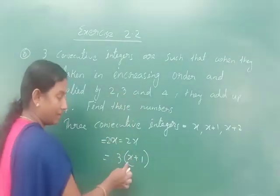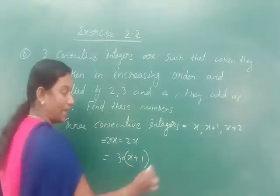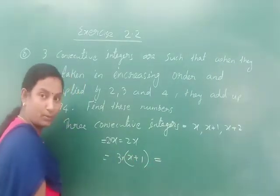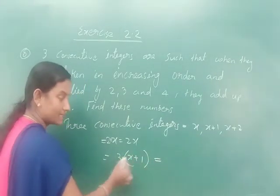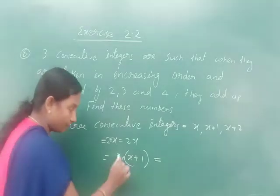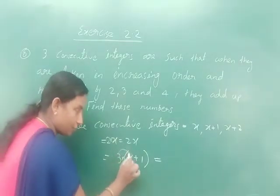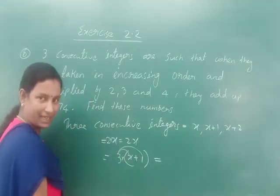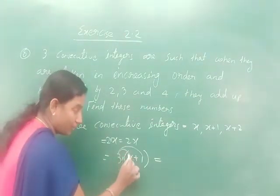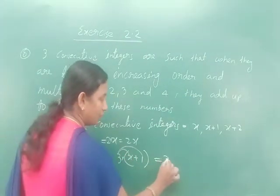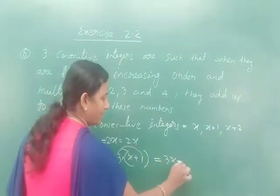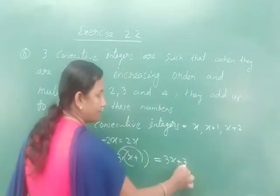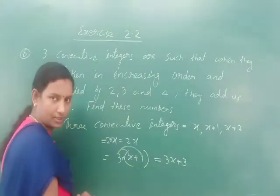How do we multiply 3 into (x+1)? We apply the distributive property: A into (B+C) equals A·B + A·C. So 3 into x is 3x, plus 3 into 1 is 3, giving 3x+3.